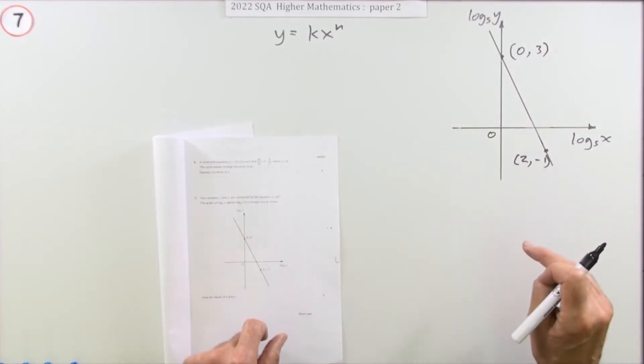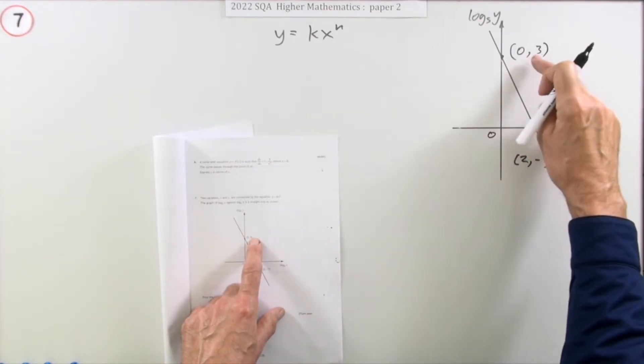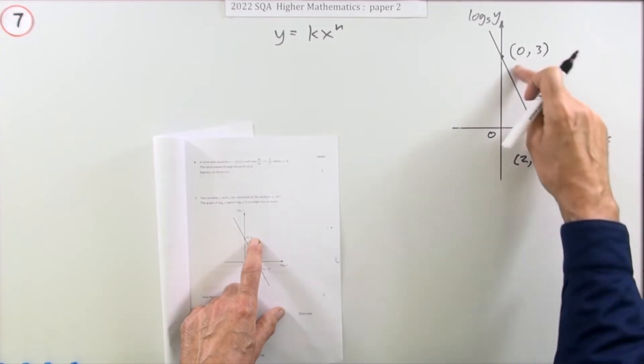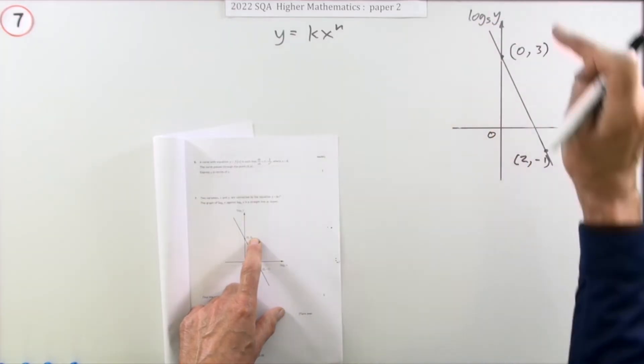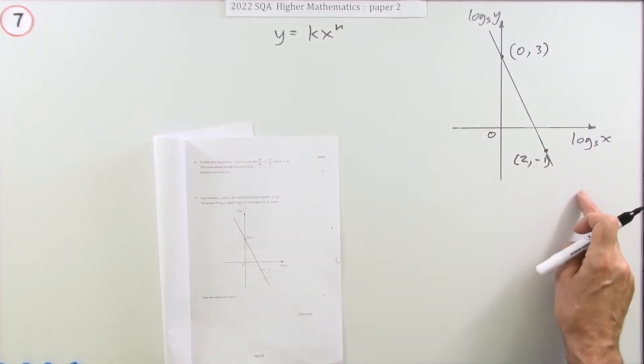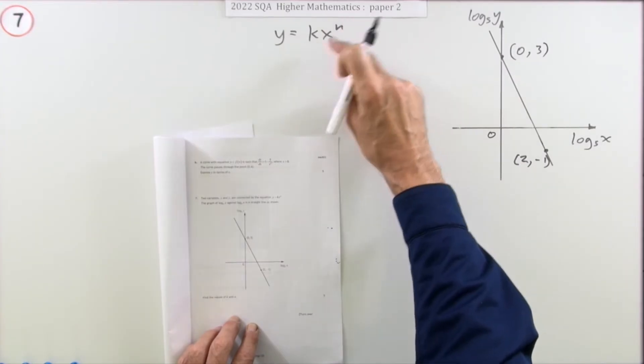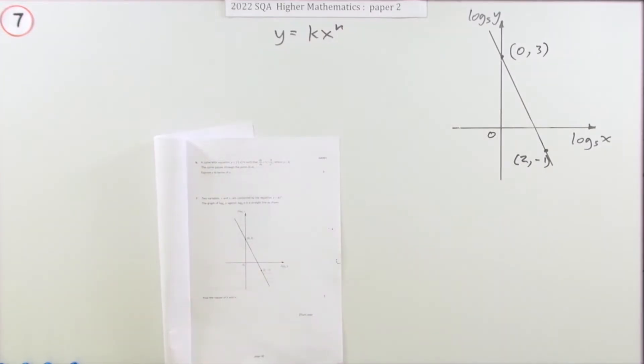So what does it say? So you've plotted them, you've plotted the logs instead of the original values, so those aren't the original values of x and y. Those are the values of the logarithm base 5 of y, and the logarithm base 5 of x. If that's the case, from that graph, find these two values. What is the power, and what was the multiplying constant?